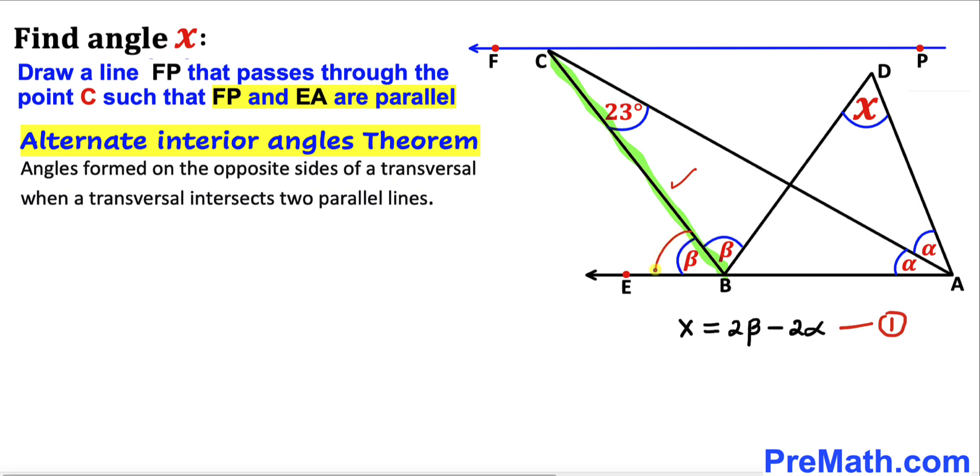Let's focus on this highlighted transversal. We can see that angle beta and this angle are alternate interior angles. If this angle is beta, then this has to be angle beta as well. Now let's make some observation. We know this angle is alpha, this angle is beta, so this angle has to be the difference of two angles. This is simply beta minus alpha equals 23 degrees. Let me call this our equation number two.